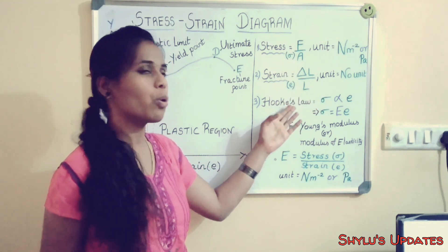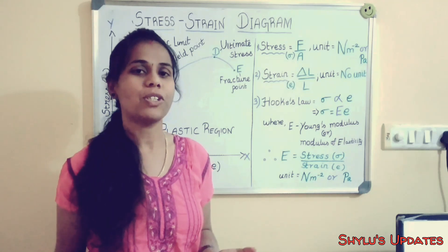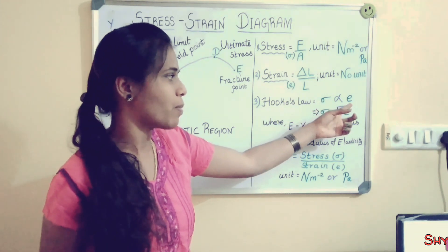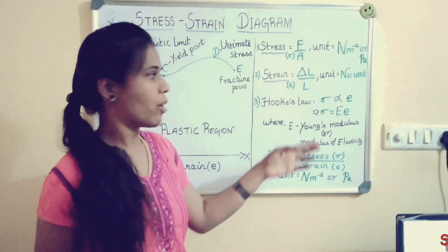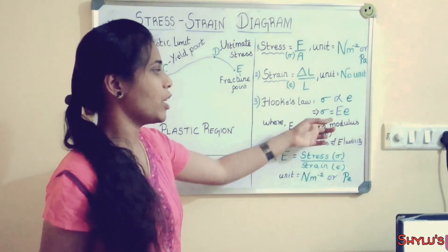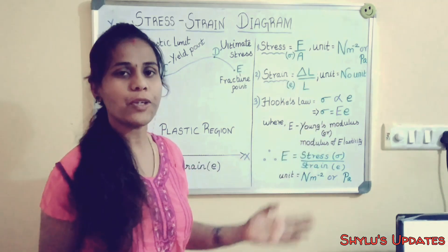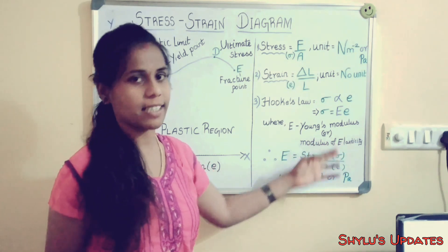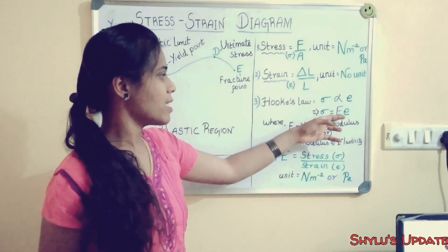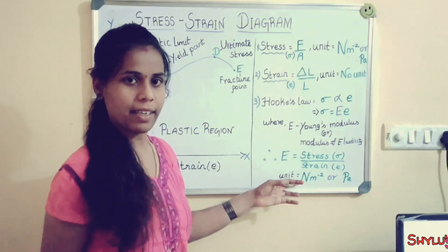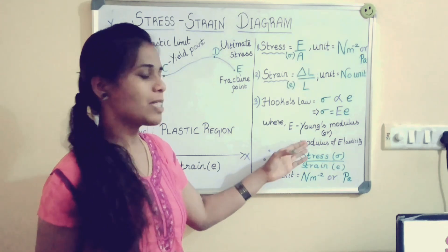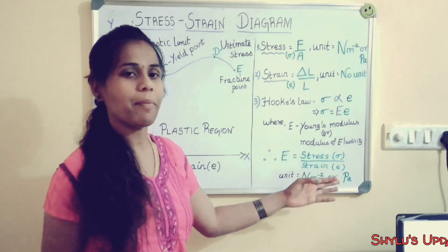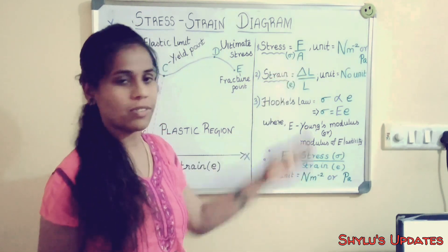The third concept is Hooke's law. Hooke's law means stress is directly proportional to strain. So sigma is directly proportional to ε (strain). When we solve the equation, we get a new constant which is called Young's modulus, denoted by the letter E. Young's modulus is otherwise called the modulus of elasticity. We get E = σ/ε, that is stress divided by strain. The unit of Young's modulus is Newton per meter square or Pascal, because strain has no dimension, giving the same unit as stress.